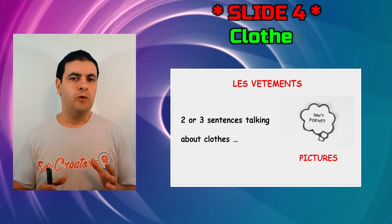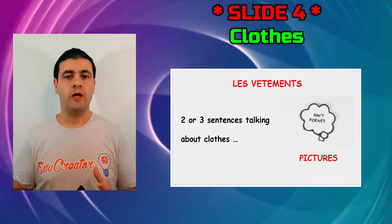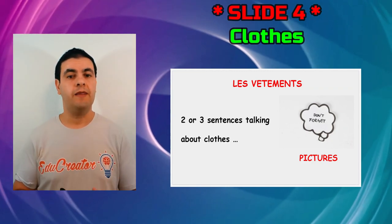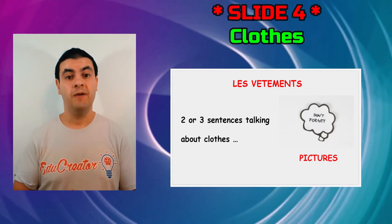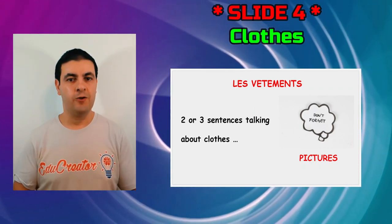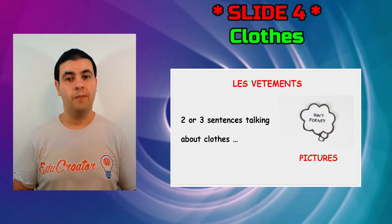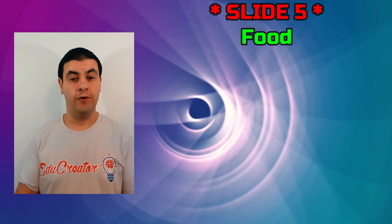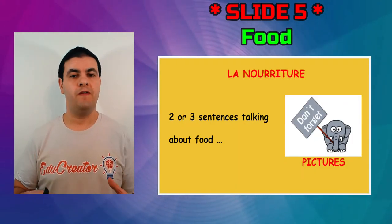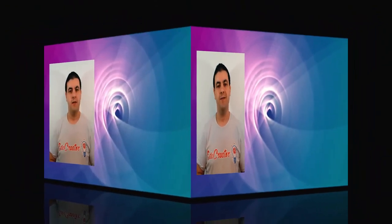Slide four is about clothes. Write two or three sentences about clothing in that country in general. For example, for Canada: 'They wear big coats because it's very cold; they also wear boots because it snows.' You can include clothes worn during holidays or festivals, and illustrate with pictures of people and what they wear. Slide five is about food: write one or two sentences about the most famous food in that country and include pictures.